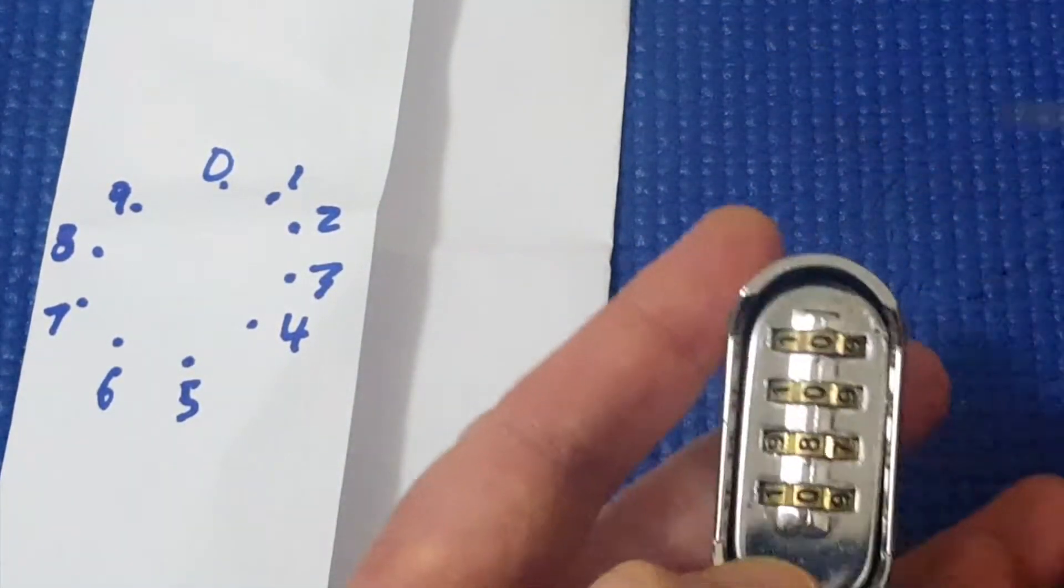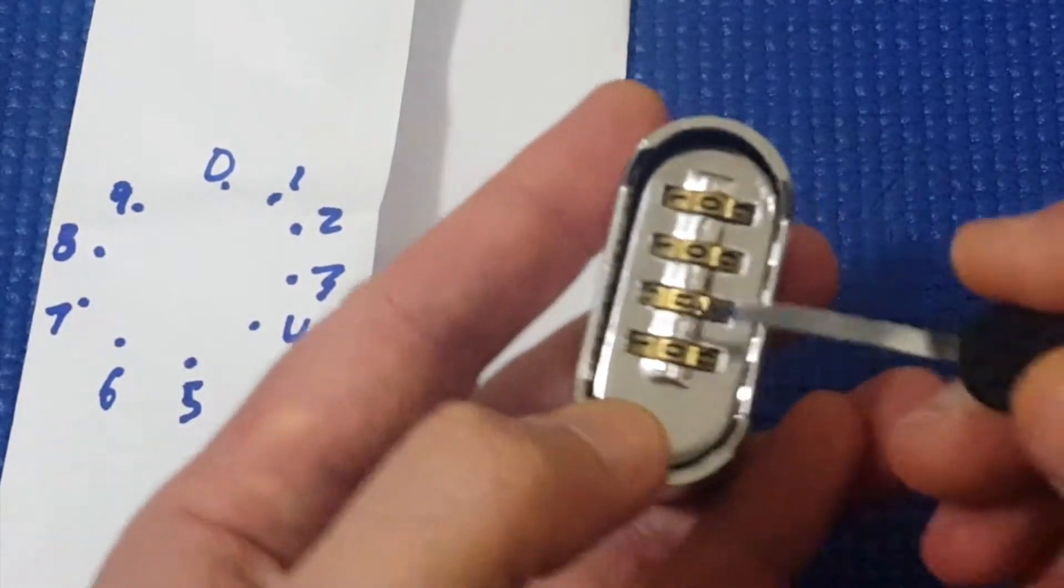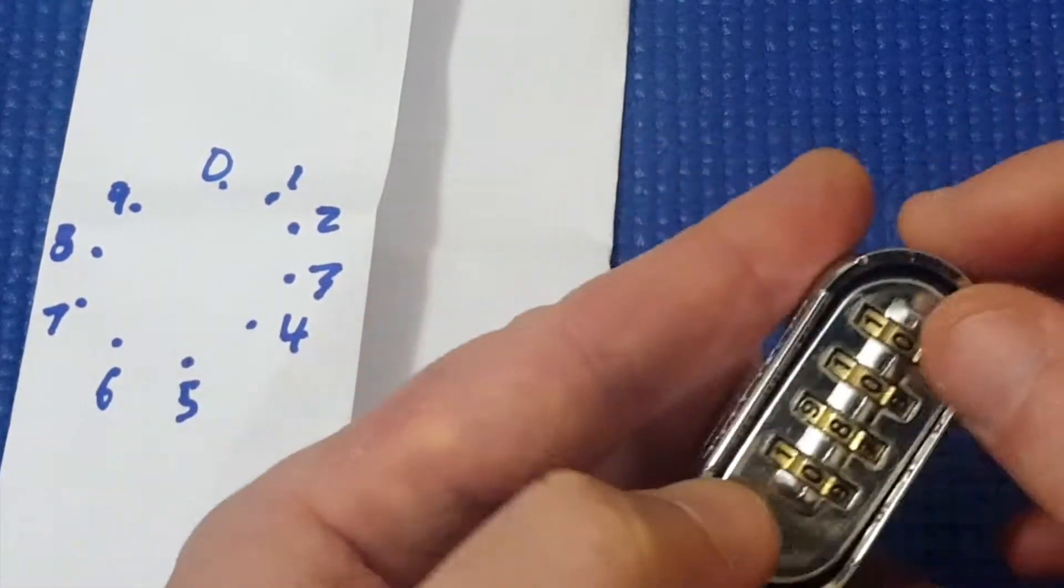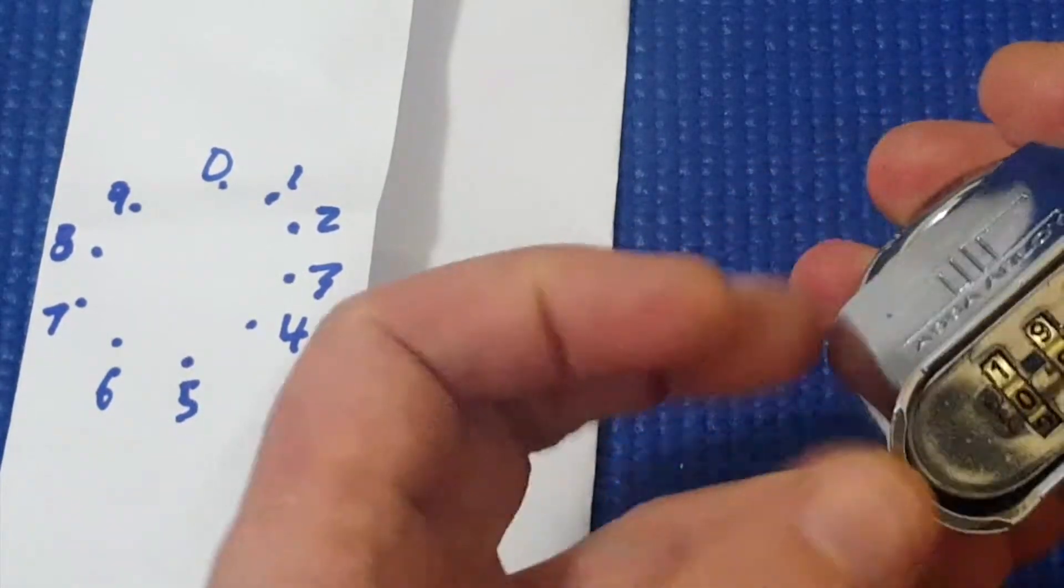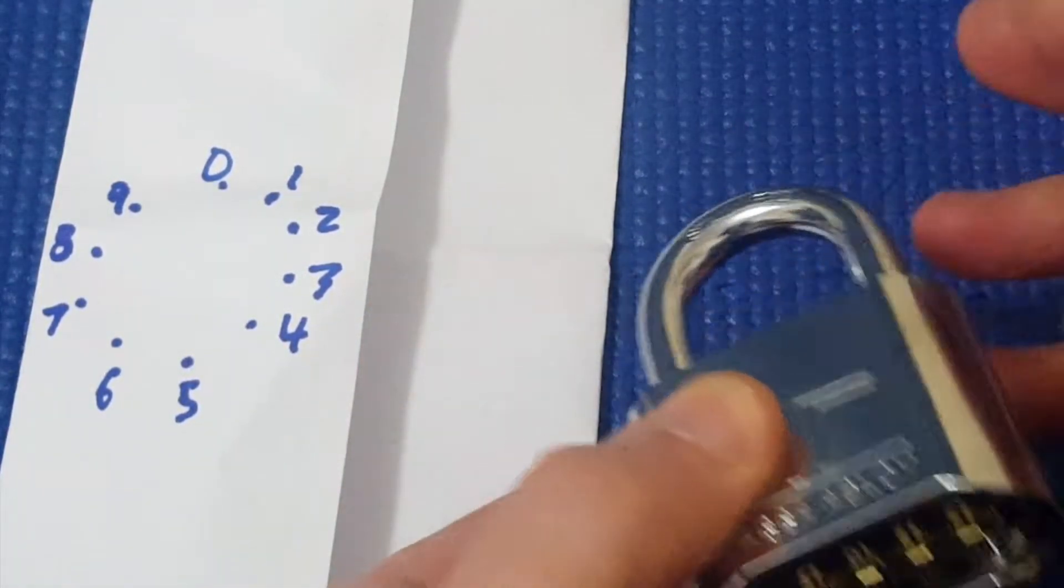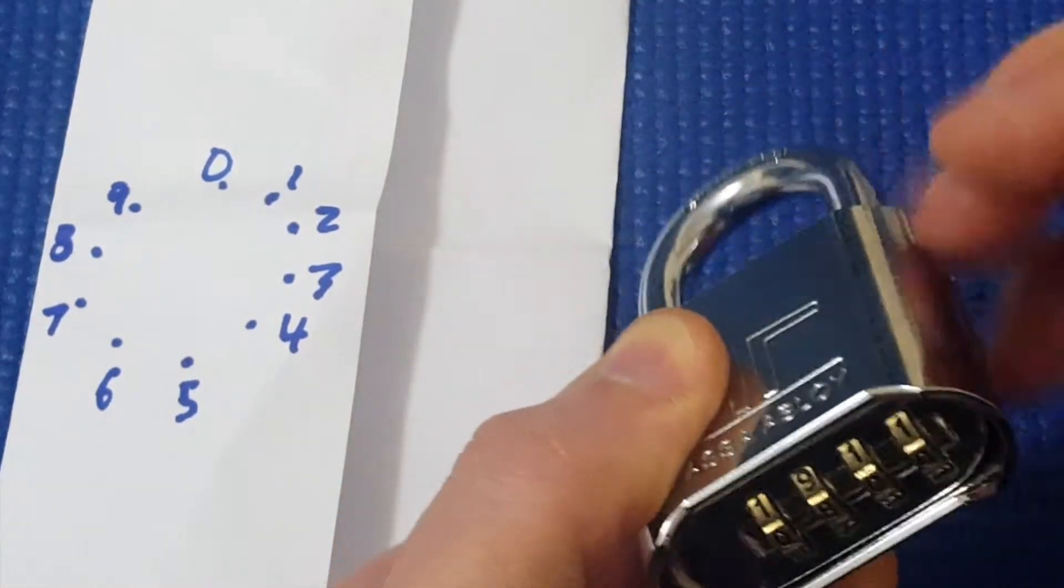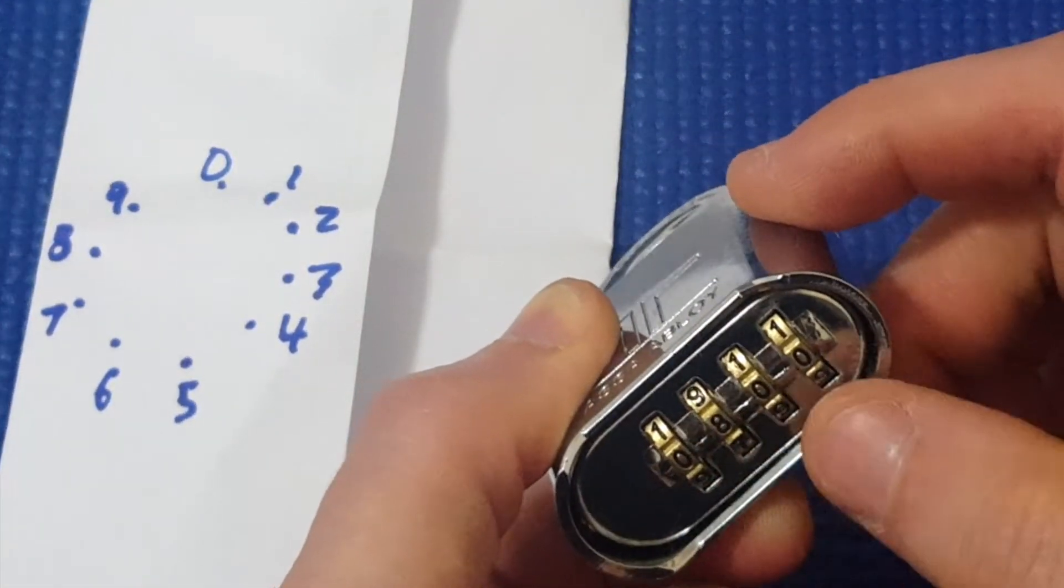So I think it's 0, 8, 0. And now I have to try every number for this one. Now, with this lock, to open this lock, I need to depress this shackle and let go again for it to open when it's on the right combination. Otherwise, it won't open.